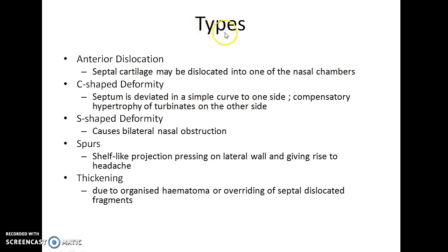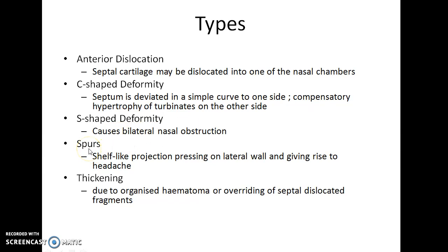The types of deviated nasal septum include: anterior dislocation, where the septal cartilage is dislocated into one of the nasal chambers; C-shaped deformity, where the nasal septum deviates in a simple curve to one side with compensatory hypertrophy of turbinates on the other side; S-shaped deformity, which causes bilateral nasal obstruction; and spurs, which are shelf-like projections pressing on the lateral wall of the nose and giving rise to headache.